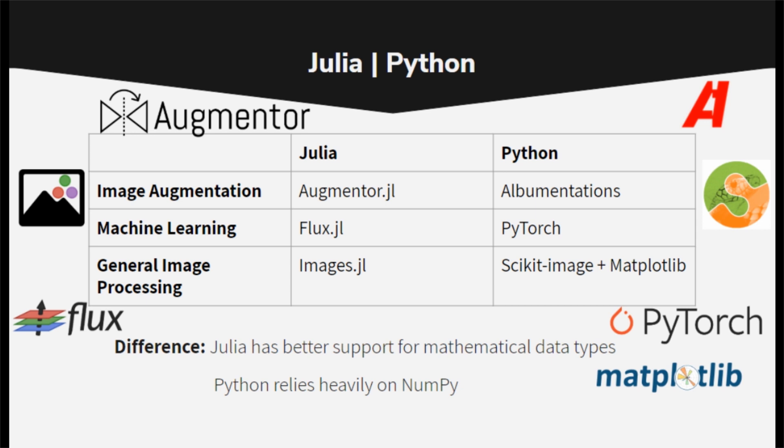For machine learning, in Python I used PyTorch, and in Julia I used Flux. For general image processing, in Python I used scikit-image and matplotlib. In Julia, I used Images.jl.